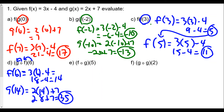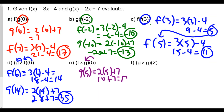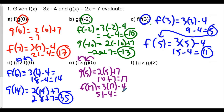Following the same pattern for part e, 5 goes into g first. So g of 5 is 2 times 5 plus 7, or 10 plus 7, which equals 17. Then we plug that into f. So f of 17 is 3 times 17 minus 4, which is 51 minus 4, or 47.